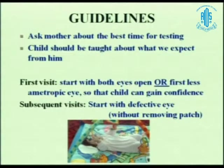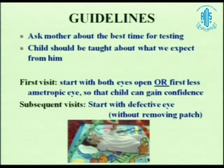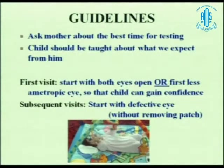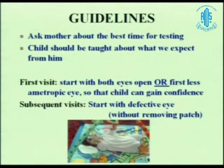Sometimes the kid comes into the OPD and starts crying, and that's the end of the examination. You can ask the mother what would be the better time to evaluate the kid. You can tell the parents what to expect of the child — sometimes we give them an Allen preschool chart or a Lea symbol chart and tell them what is expected. This cannot be done on the first appointment, and the kid may not respond even on Lea symbols because he doesn't know what is expected. When you start on the first visit, try to start with both eyes open. Have a little more patience compared to adults.